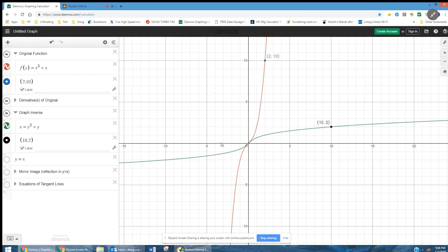And 10, 2 is on it, just for the heck of it. Here is the line y equals x, which serves as the mirror for a function and its inverse function. There are reflection images, or points on one graph have a point on the inverse that's a mirror image.